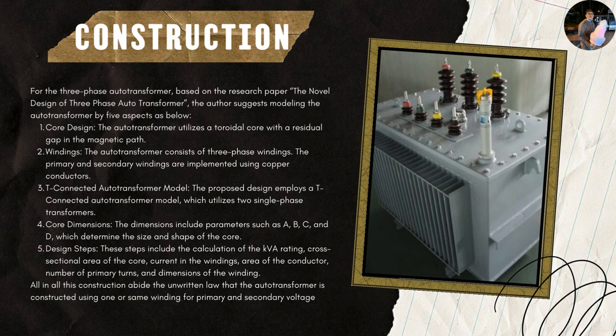Next is the winding. The auto transformer consists of three-phase windings. The primary and secondary windings are implemented using a copper conductor. The number of turns in the winding is determined based on the desired voltage transformation ratio and rated voltage. Next is the T-connected auto transformer model. The proposed design employs a T-connected auto transformer model which utilizes two single-phase transformers. This configuration helps reduce the space, volume, and weight requirements of the auto transformer.